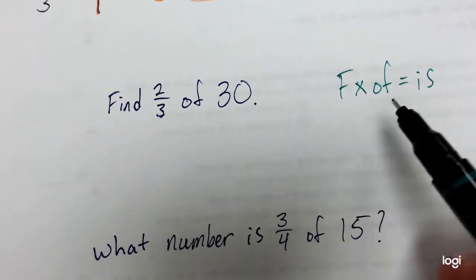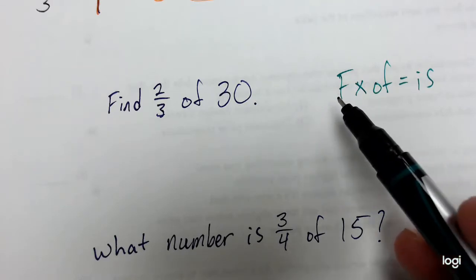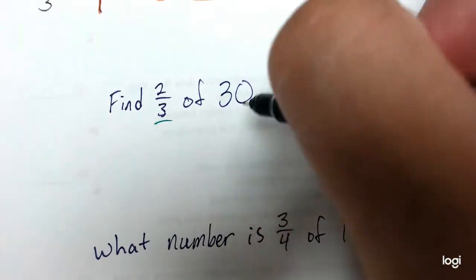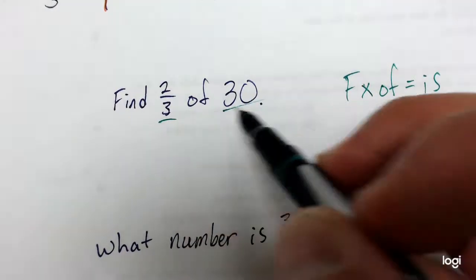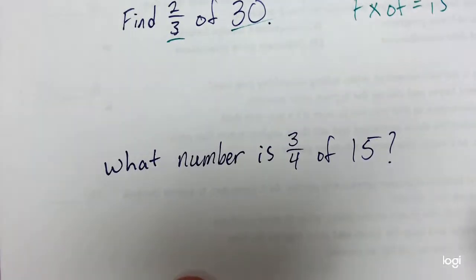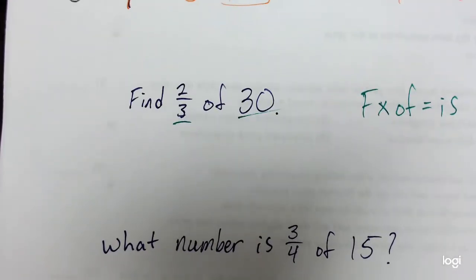So what this statement means is that if we take the fraction, the fraction being this number, we multiply it by the of number, then we will find our is number, or we will find out what is the answer. And then that will also work on problems when we're worded this way as well.